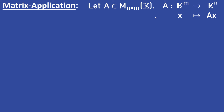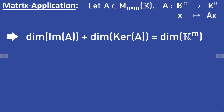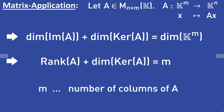So for an n times m matrix A, we have that the dimension of the image of A plus the dimension of the kernel of A is equal to the dimension of K^m, which equals m — the number of columns of A. The dimension of the image of A is also called the rank of A. So in the end we get that the rank of A plus the dimension of the kernel of A is equal to the number of columns of A. That is the matrix formulation of the rank-nullity theorem.